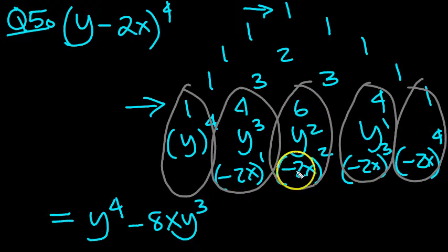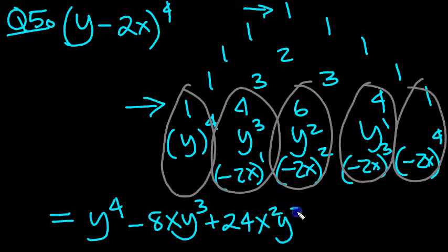Next one, we've got minus 2 squared, which is 4, times 6, which is plus 24. 6 times 4 is 24. We've got an x squared when we expand this, haven't we? And we've also got a y squared.